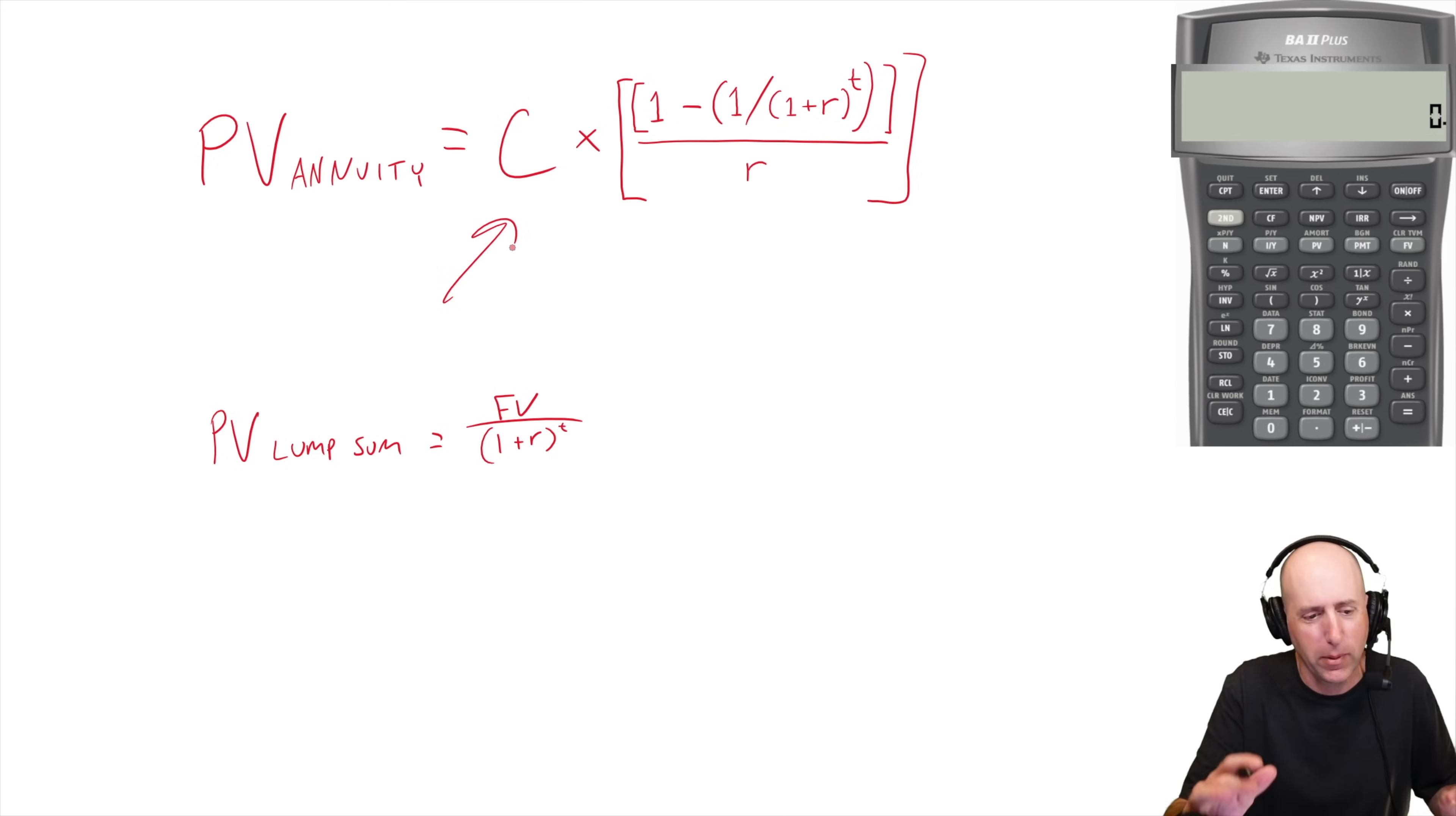I'm going to do this all in my financial calculator, but I always think of it in terms of these formulas. At the end of the bond you typically get your thousand dollars back or whatever you invested in the bond - you get the face value of the bond back.